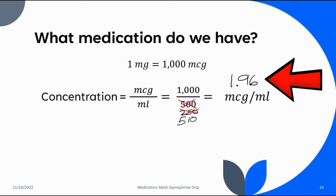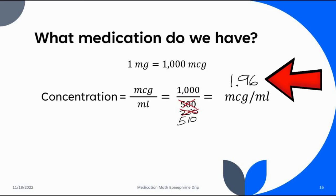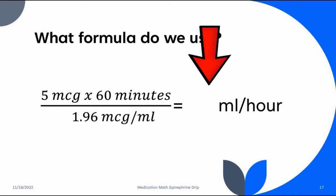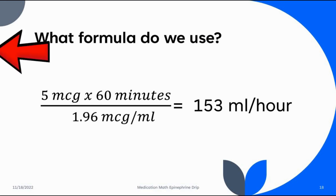If we plug that 1.96 micrograms per milliliter into the original formula: 5 micrograms times 60 minutes divided by 1.96, that gets us to 153 milliliters per hour. That's not very far from 150 milliliters per hour. That's very negligible. So yeah, it did throw the math off a bit, but the truth is it's not that far off.